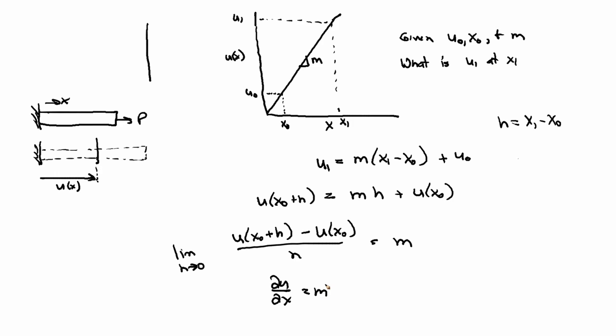And of course, this is the slope of the line, right? We know that. So this is our mathematical definition of strain, right? In this case, it's just one-dimensional, so we're just talking about the strain in the x-direction. This is our mathematical definition of strain.